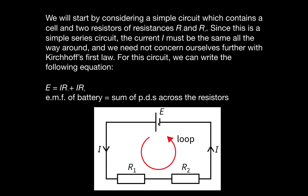In a typical series circuit, there is a power source with voltage E, current I flowing through the circuit, and components with resistances R1 and R2. Since it is a series circuit, current is constant throughout — there is no distribution of current, so we can concentrate on the second law.